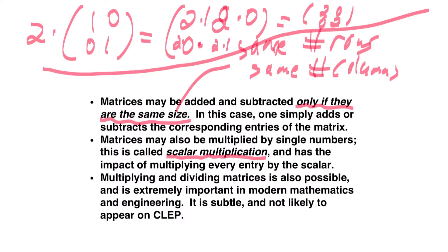So when I take every entry of a matrix and multiply it by the same number, this is called scalar multiplication. Multiplying and dividing matrices is possible in certain cases and is a very interesting topic in mathematics, but it is not covered on the CLEP, so this is not something we'll talk about.